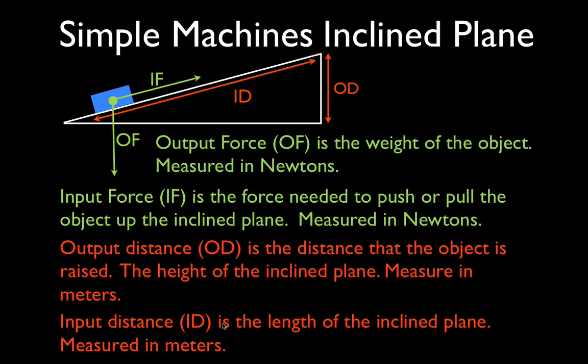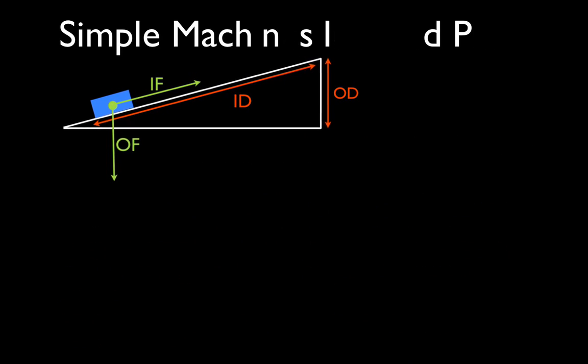So for the inclined plane, the input distance is the length of the plane, and the output distance is the height of the inclined plane or the ramp, and those are both measured in meters.